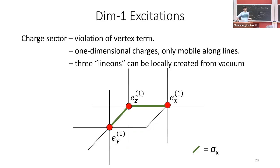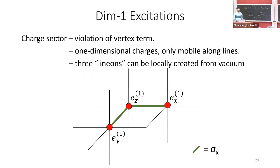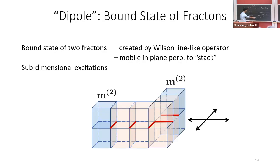The X-cube model, even though historically Haah's code came first, is the model that a lot of people paid attention to because it was easier to understand. It distilled the strange features of these fracton models. That was what we call a type-1 model. There are also so-called type-2 models — systems where you have no mobile topological excitations at all. All excitations that cannot be created locally are completely stuck, because they're created not at the ends of membrane operators but at the corners of fractal operators such as the Sierpinski tetrahedron.